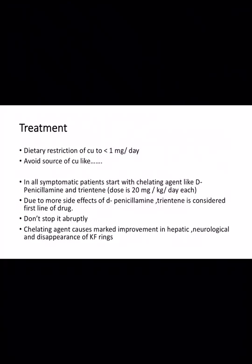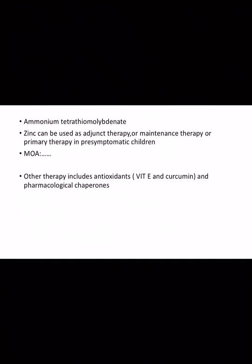Chelating agents include D-penicillamine and trientine. The dose of both chelating agents is 20 milligrams per kilogram per day. Due to more serious side effects of D-penicillamine, some pediatricians consider trientine as a first-line drug. Chelating agents should not be stopped abruptly. With the use of chelating agents, there is marked improvement in hepatic and neurological features, and there may be disappearance of KF rings.